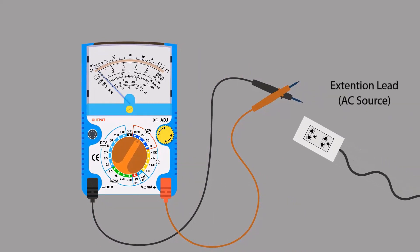Take an AC power source in order to measure AC voltage. Put probes into the extension lead connection.